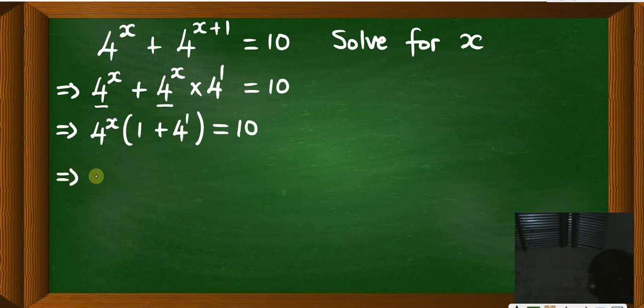So you write 4 to the power x, then this one 4 to the power 1 is 4, then plus 1 is 5. So you say times 5 here, then is equal to 10.